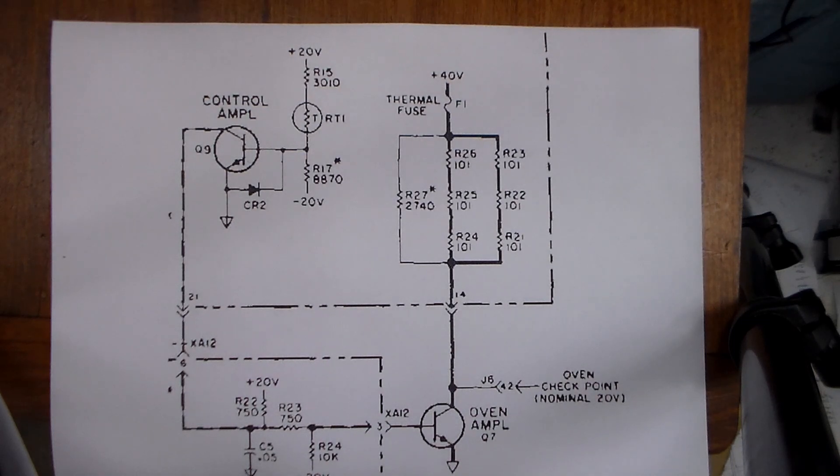The next step is to remove R17 and bring a couple of lead wires out so that I can hook into a decade box and adjust the set point for Q9 so that we'll get the set temperature within the range of 70 to 80 degrees C and also have the oven checkpoint value at approximately 20 volts.